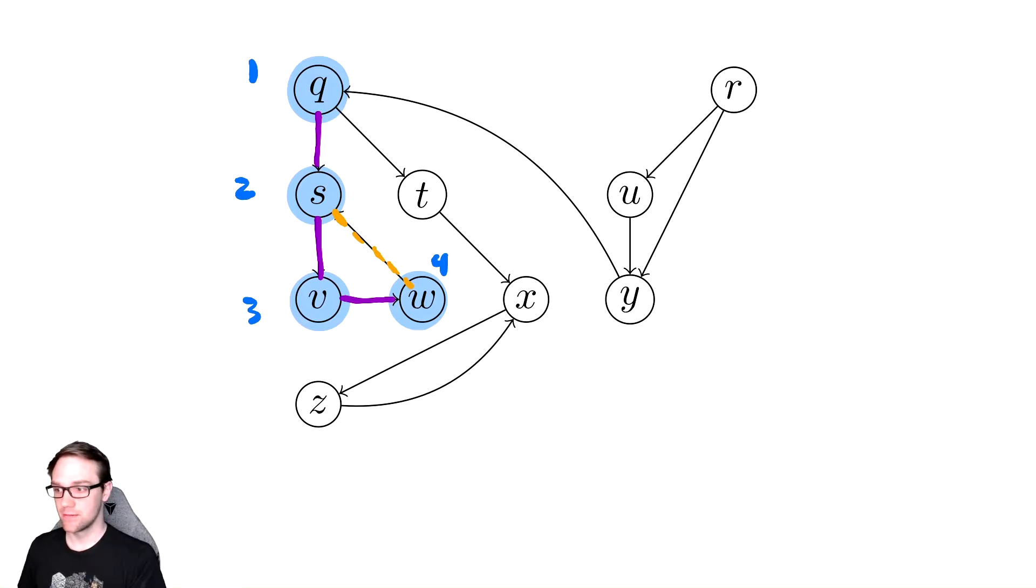And we are then done with w, so we finish w. And we finish v because there's also nowhere else to go from v. Then we finished s, but there are places to go from s. Let's switch our coloring of these to be finished.